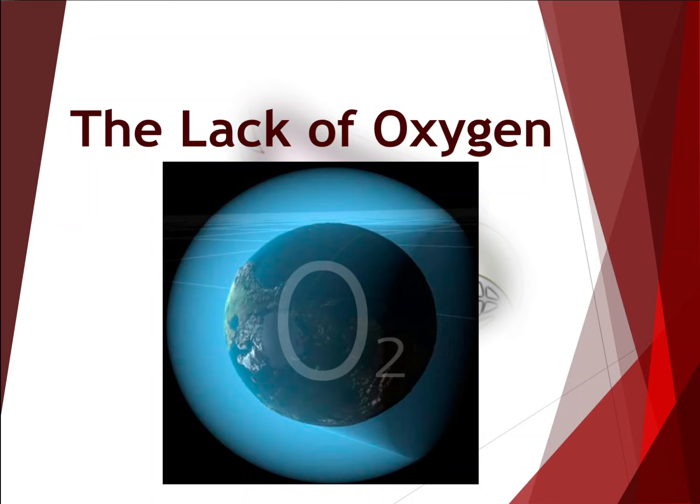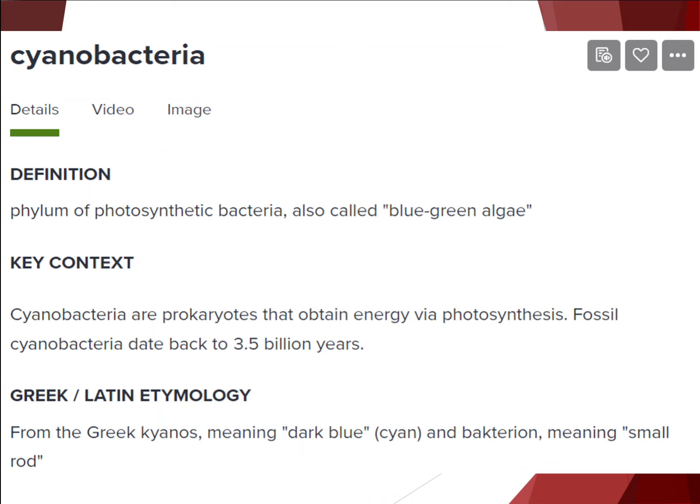Almost all life on the planet depends on oxygen, but that early atmosphere — there were more than one, so I should say atmospheres — lacked any free oxygen, meaning the oxygen in the form of O2 that you and I are breathing right now. It's important to understand how this element became so abundant in the atmosphere today. That's a change from about 0% free oxygen to today about 20% free oxygen.